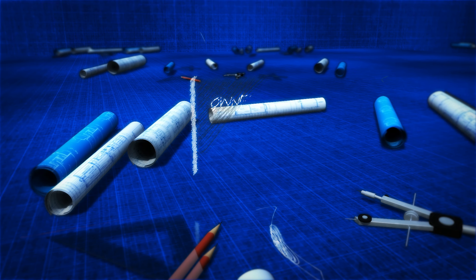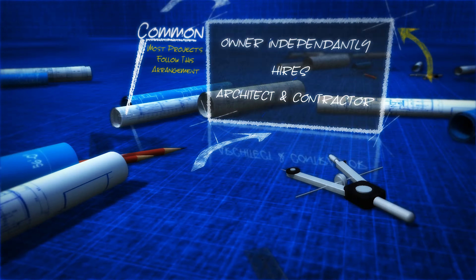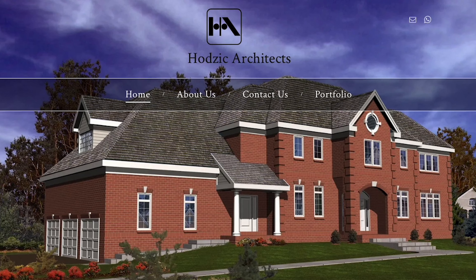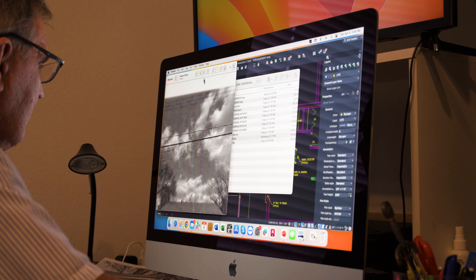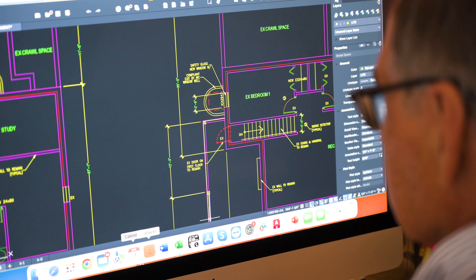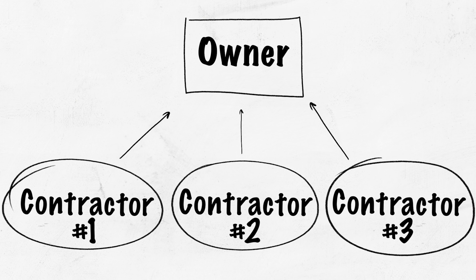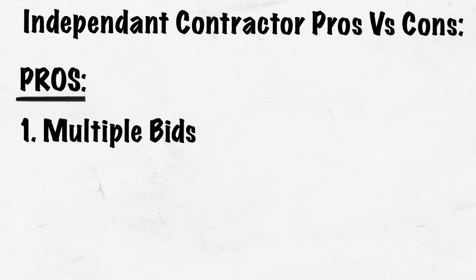We're going to break down the pros and cons of each arrangement to help you decide which one might be right for you. Number one: the owner can select the architect, the architect prepares drawings in collaboration with the owner, designs the project, makes the construction drawings, and then issues the drawings for bidding to contractors. We like to see three contractors bidding on the project, after which the owner can select which one they want.